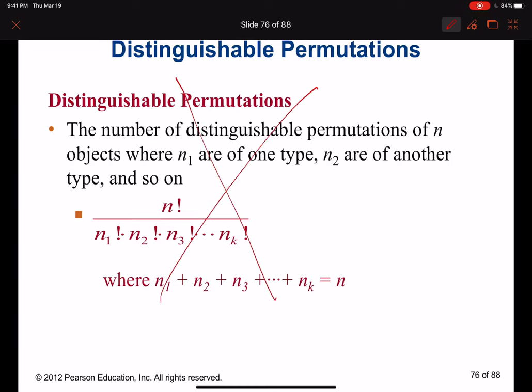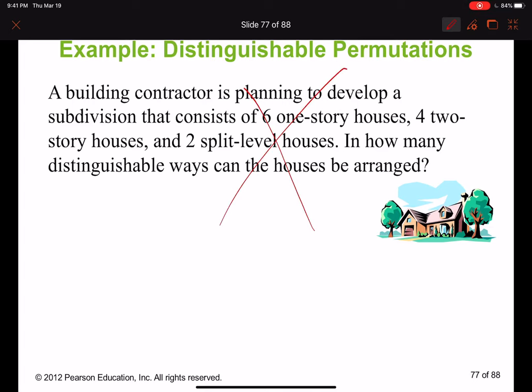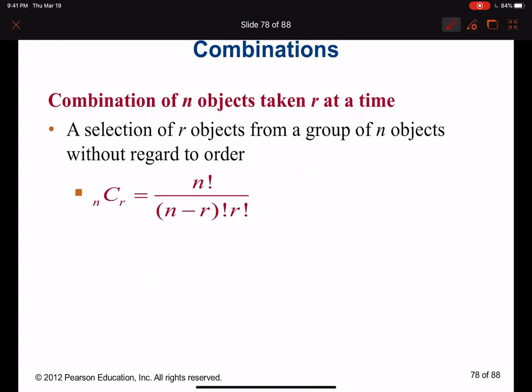We are not covering distinguishable permutation. Now combination. Combination is something similar to permutation, but we use combination when order is not important. We select some elements out of the total but order is not important. So n is again the total amount of elements and r is the selected amount of elements.